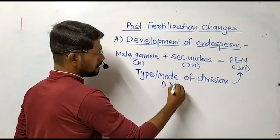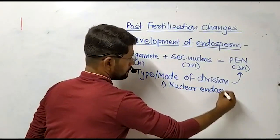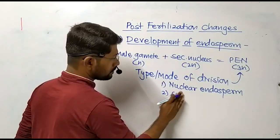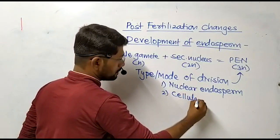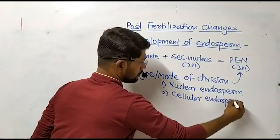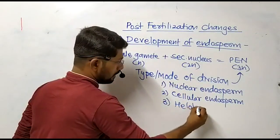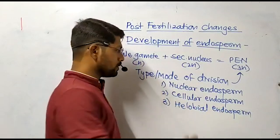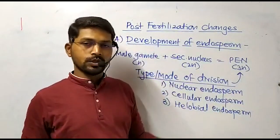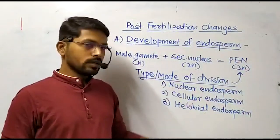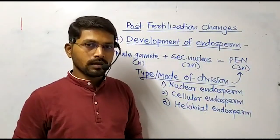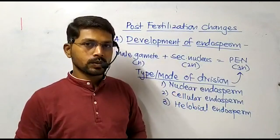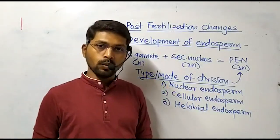There are three different types of endosperm. The first one is called nuclear endosperm, the second one is called cellular endosperm, and we have to remember the basis of classification — that is, the type or mode of division followed by the primary endosperm nucleus. We are going to discuss all three types in detail: how the division occurs and the occurrence of each type in certain groups of plants, starting with nuclear endosperm.